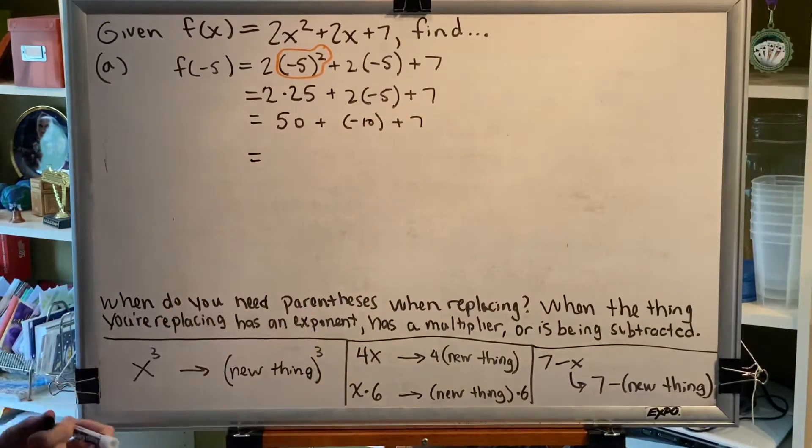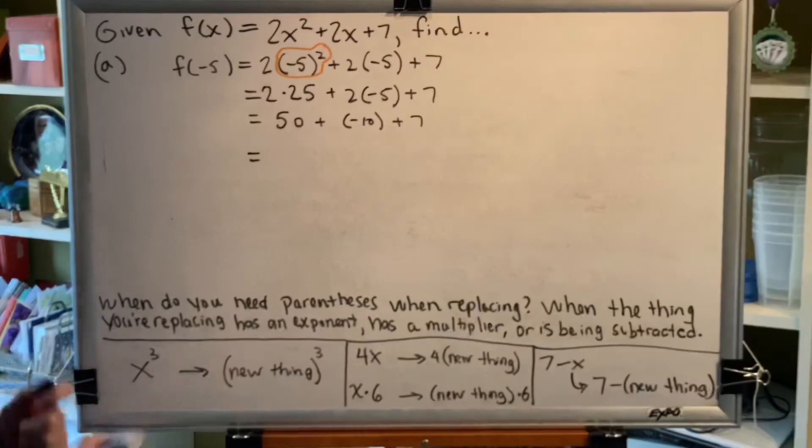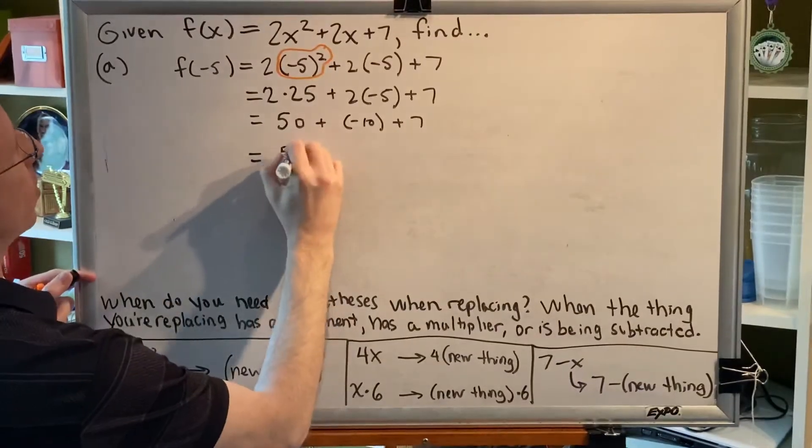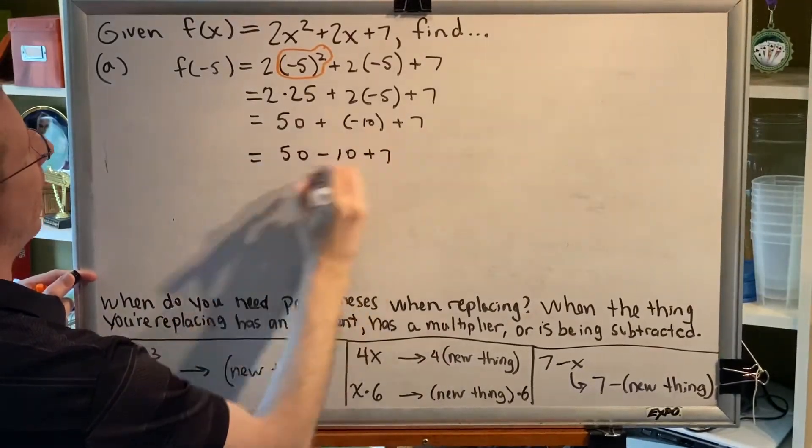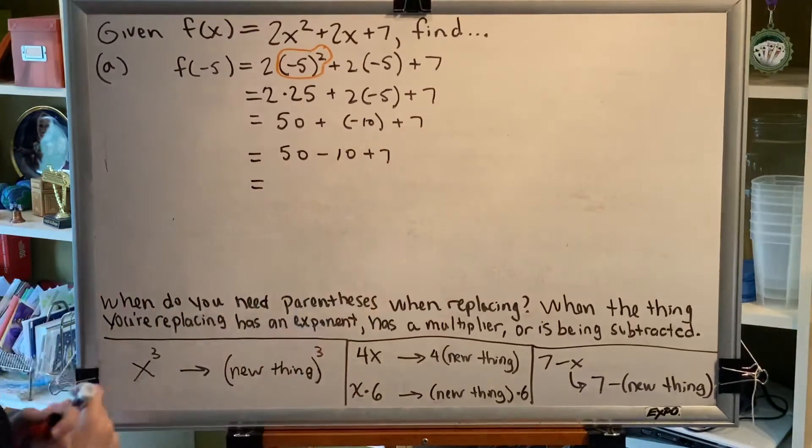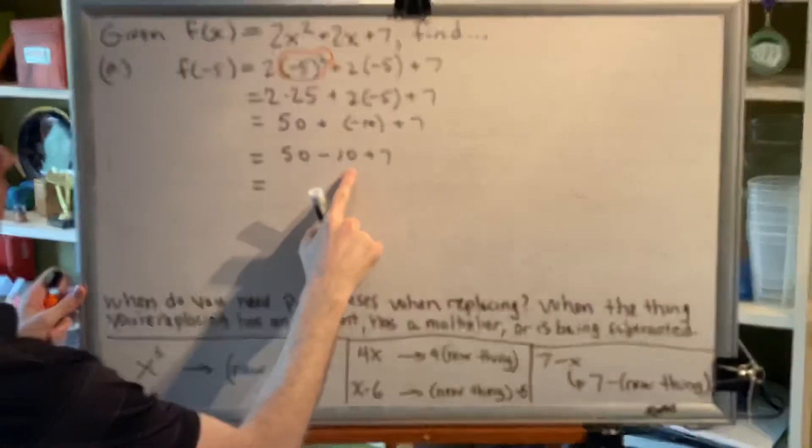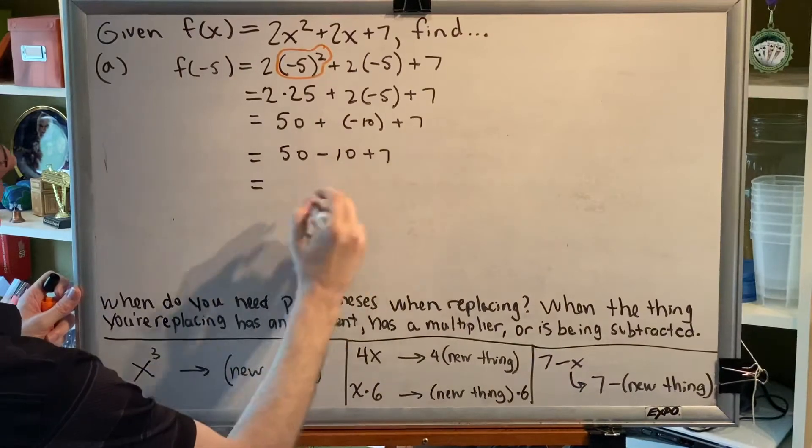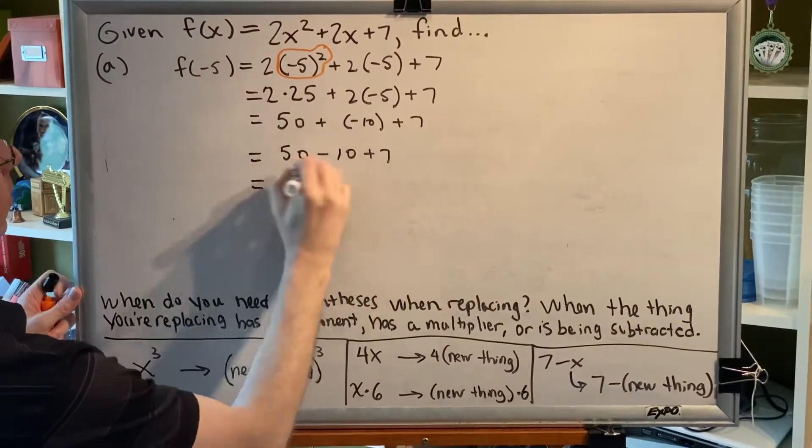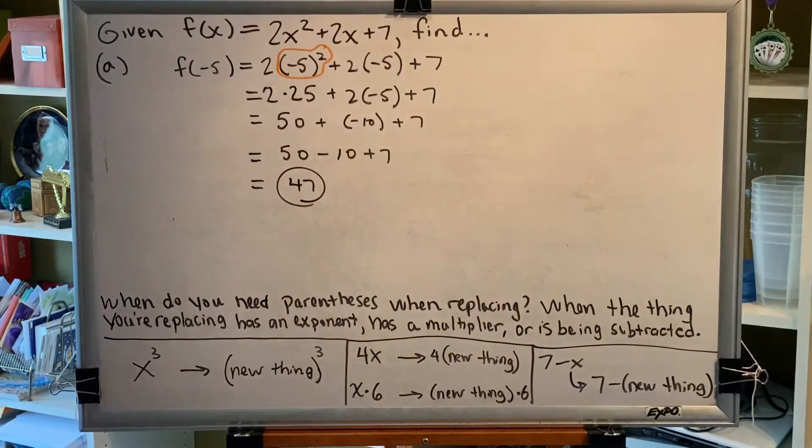And then finally, we have addition and subtraction. Adding a negative is the same as subtraction. Adding and subtraction is always done from left to right. So we do 50 minus 10 first, which is 40, then add 7, 47. So the answer to part A is 47.